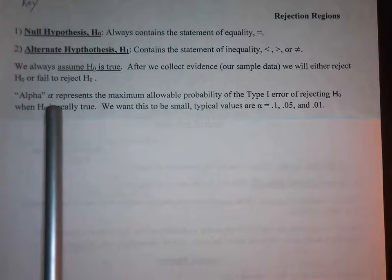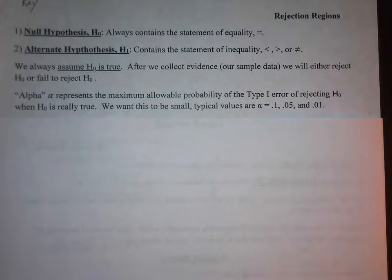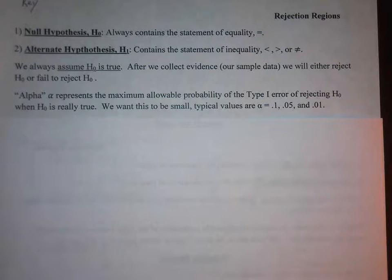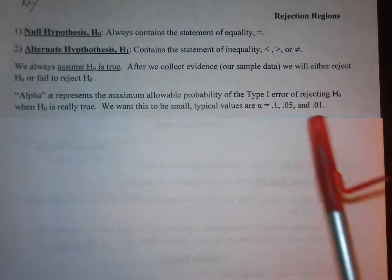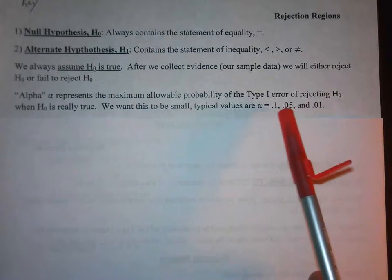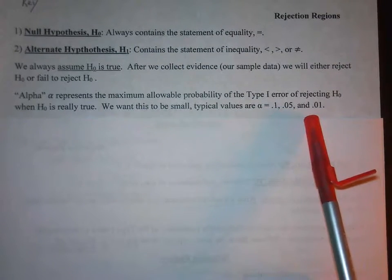Alpha represents the maximum allowable probability of the Type 1 error of rejecting H₀ when H₀ is really true. That is like sending an innocent man to jail — we want that probability to be very small. Typical values for alpha are 0.1 (10%), 0.05 (5%), and 0.01 (1%).